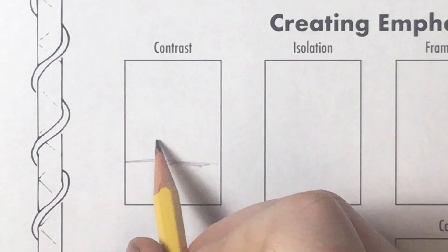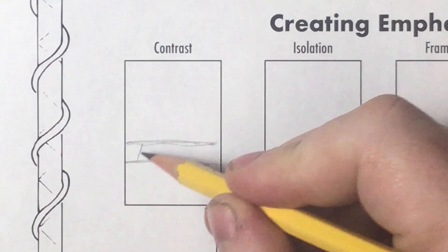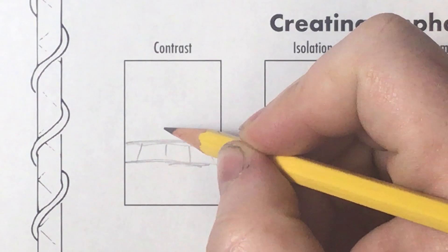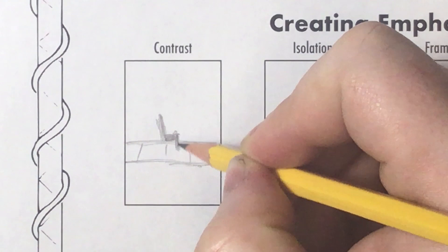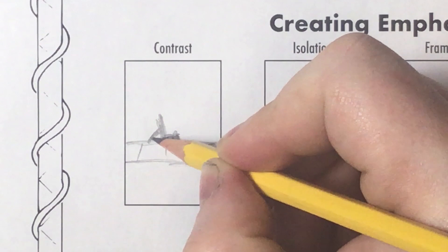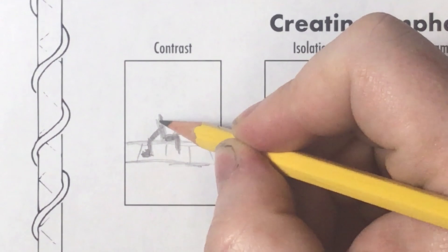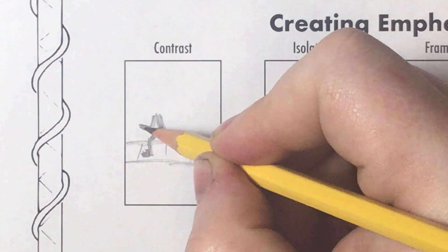I'm just going to draw a little bit of a sidewalk and maybe a person walking down the sidewalk. This is a thumbnail sketch, so I'm not trying to make perfection — just trying to get the general idea. I'm really just darkening in the area where a person's body would be, like a person running down the sidewalk. I've got his legs, and his arms are going to be bent out, one in front and one behind.